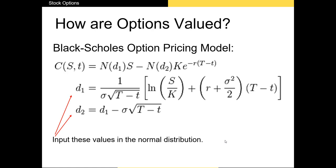In essence, this formula says that the price of a call option C for a stock S that matures at time T is equal to a specific expression. To use this formula in the real world we need five inputs: the stock price S, the strike price K, the risk-free rate r, the time to maturity (T minus t), and the implied volatility of the stock sigma. The implied variance is sigma squared.